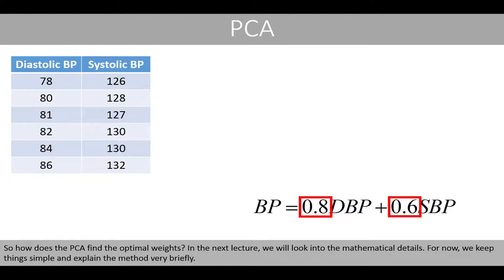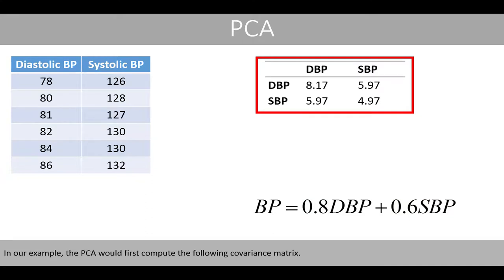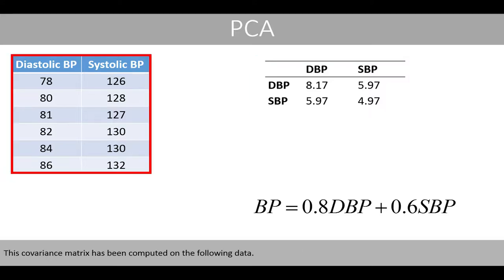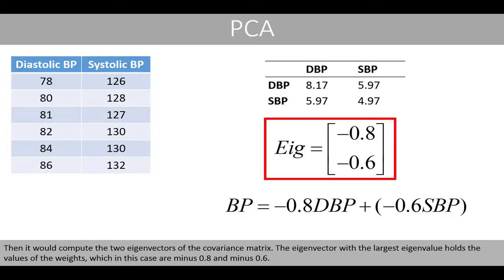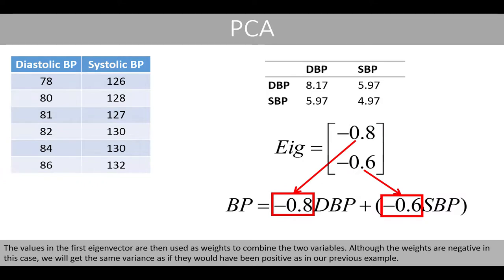For now, we keep things simple and explain briefly how PCA finds the optimal weights. In our example, PCA first computes the covariance matrix from the data. Then we compute the two eigenvectors of the covariance matrix. The eigenvector with the largest eigenvalue holds the weight values — in this case, minus 0.8 and minus 0.6. These values are then used as weights to combine the two variables. Although the weights are negative here, we get the same variance as if they were positive.